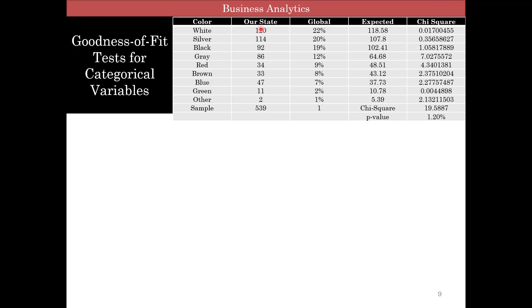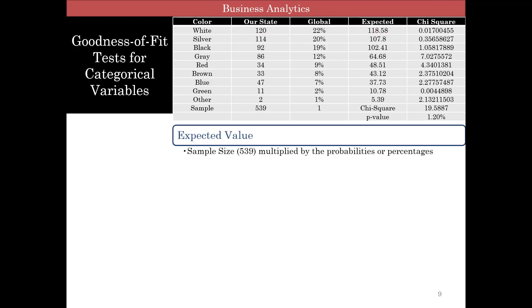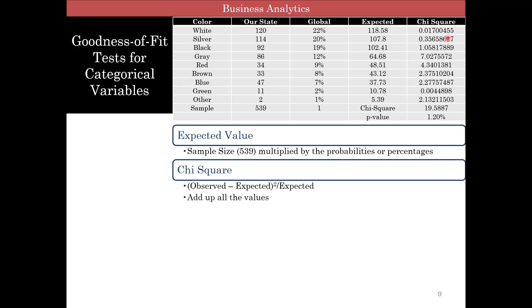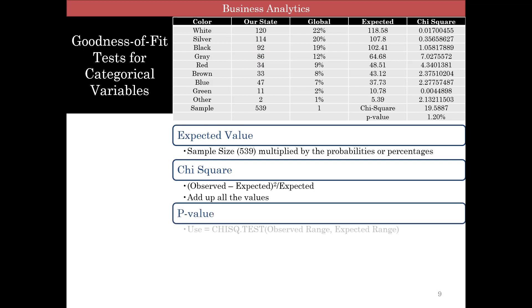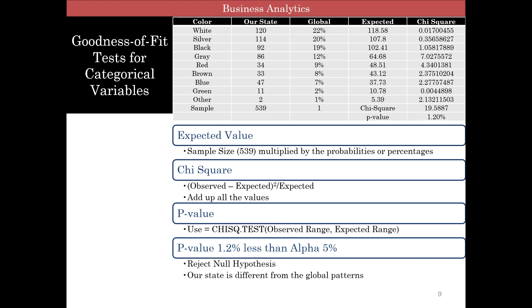Your chi-square is the observed value minus expected value, whole squared divided by expected value. You add up all the numbers to get a chi-square of 19.558. White and silver look pretty close. Gray and red are the ones which make a big difference — for red, you're expecting about 48 but getting 34; for gray, you expect about 64 but getting 86. That's where the discrepancy is. The p-value using chi-square.test is about 1.2%, which is less than alpha, so you can say our state has a different pattern from global — really because of red and gray.